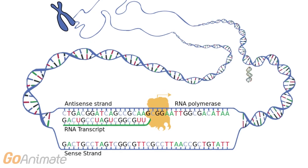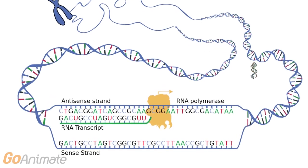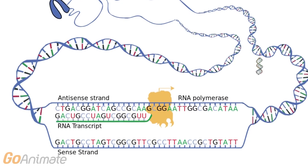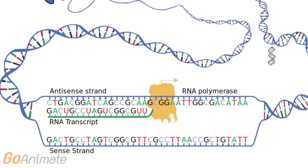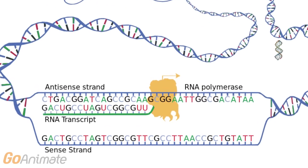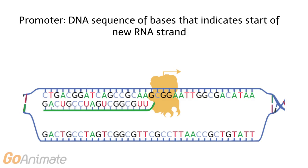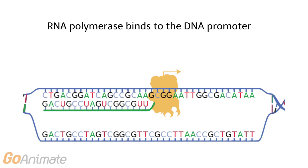In transcription, messenger RNA reads the bases on DNA. The mRNA strand begins at the promoter region on DNA. The promoter region is a sequence of DNA bases that indicates the start of a new mRNA strand. In order to read the information on DNA, enzymes including RNA polymerase unwind the DNA molecule to expose the bases.